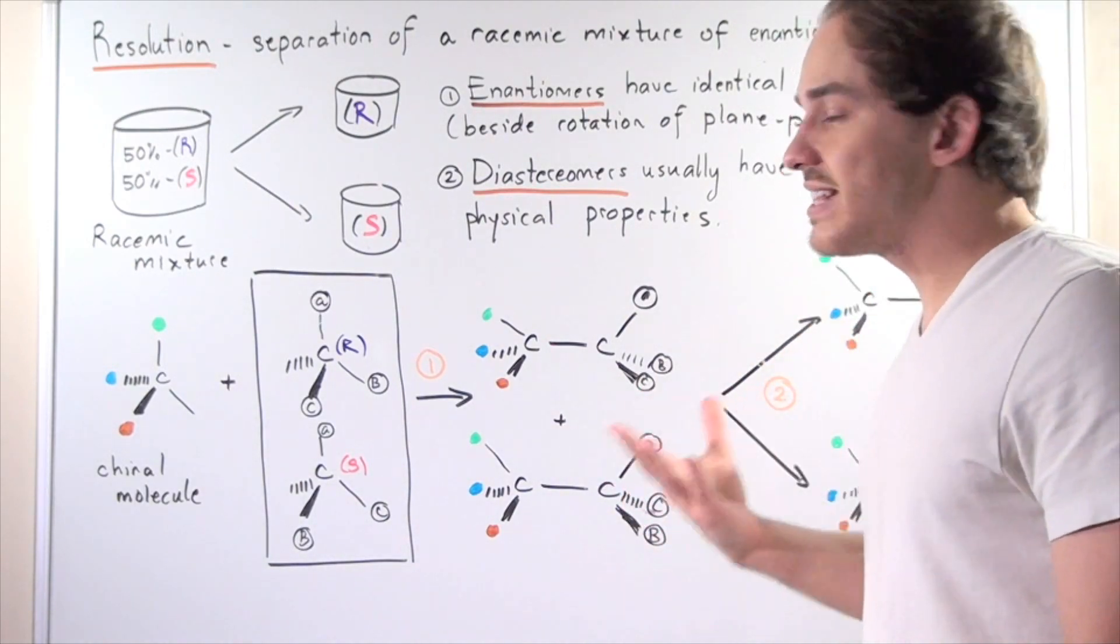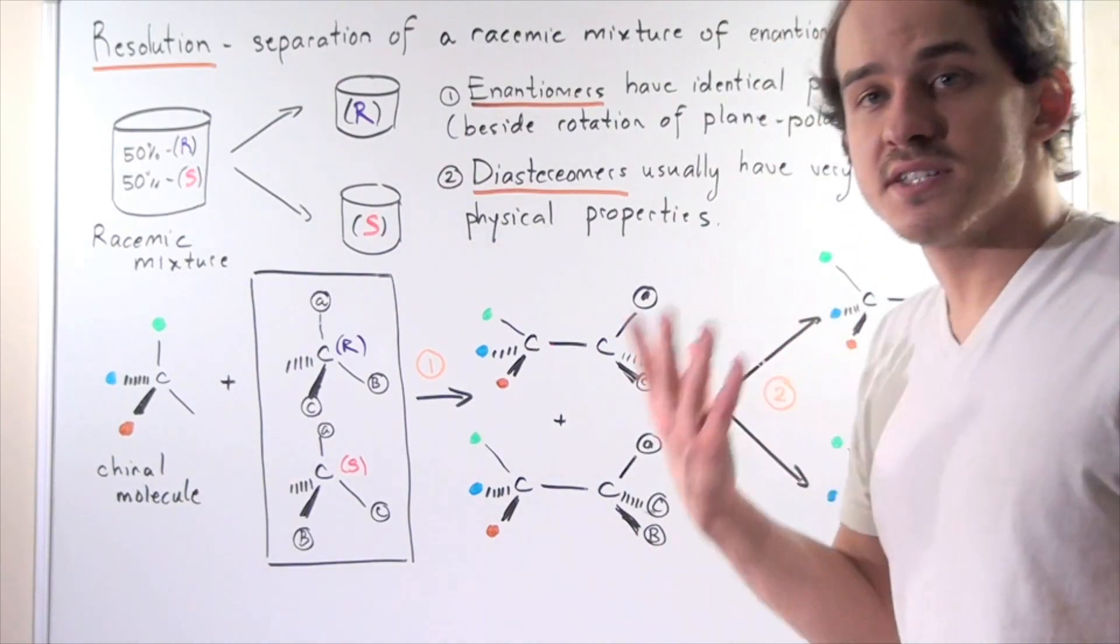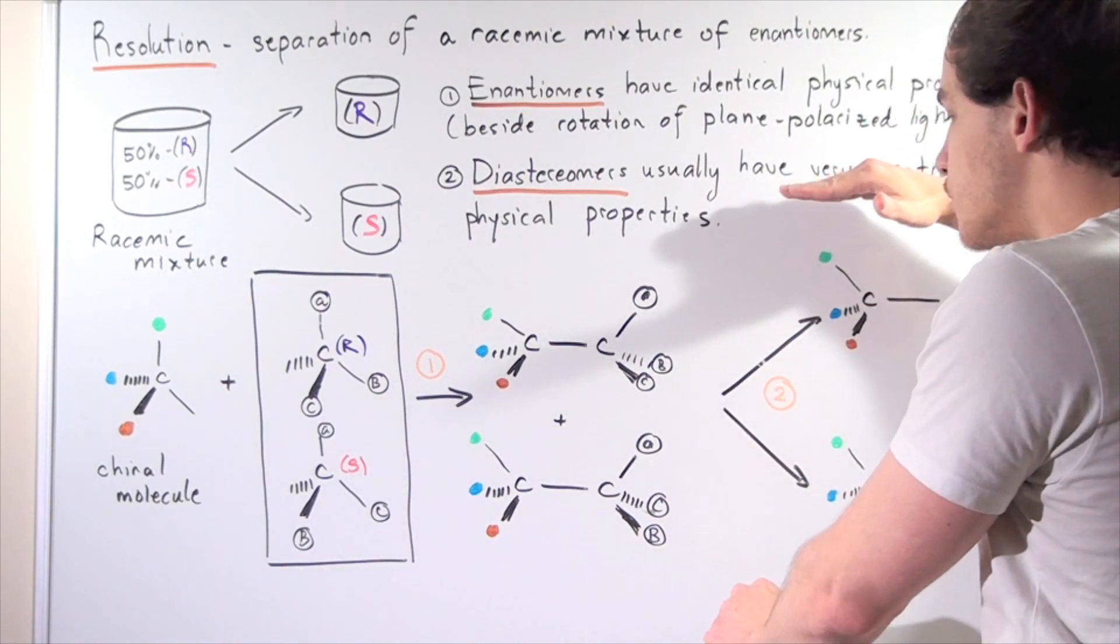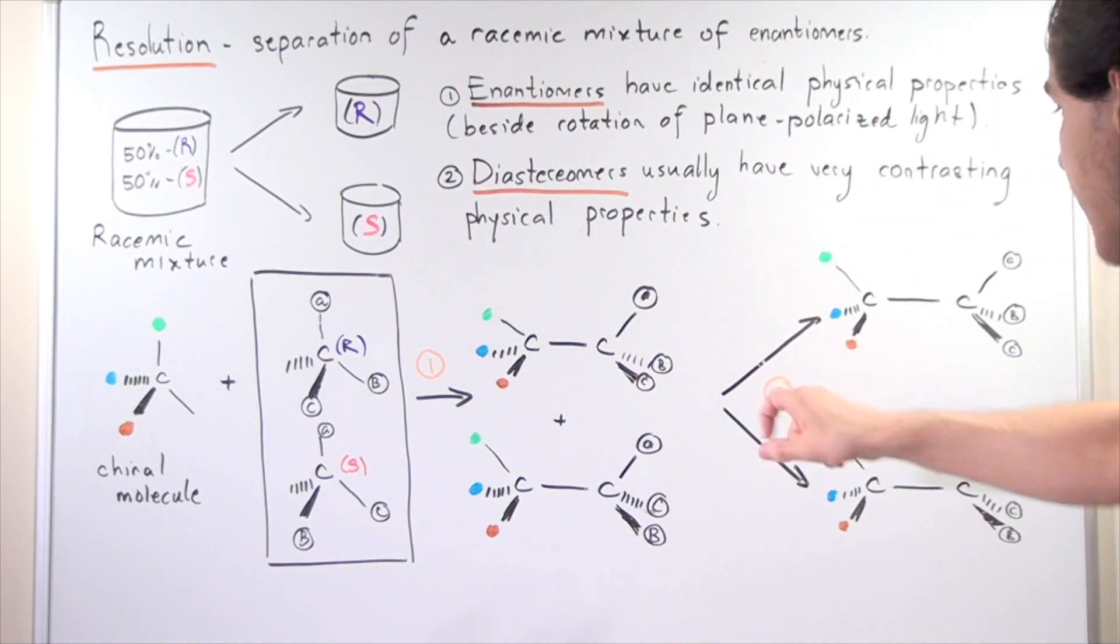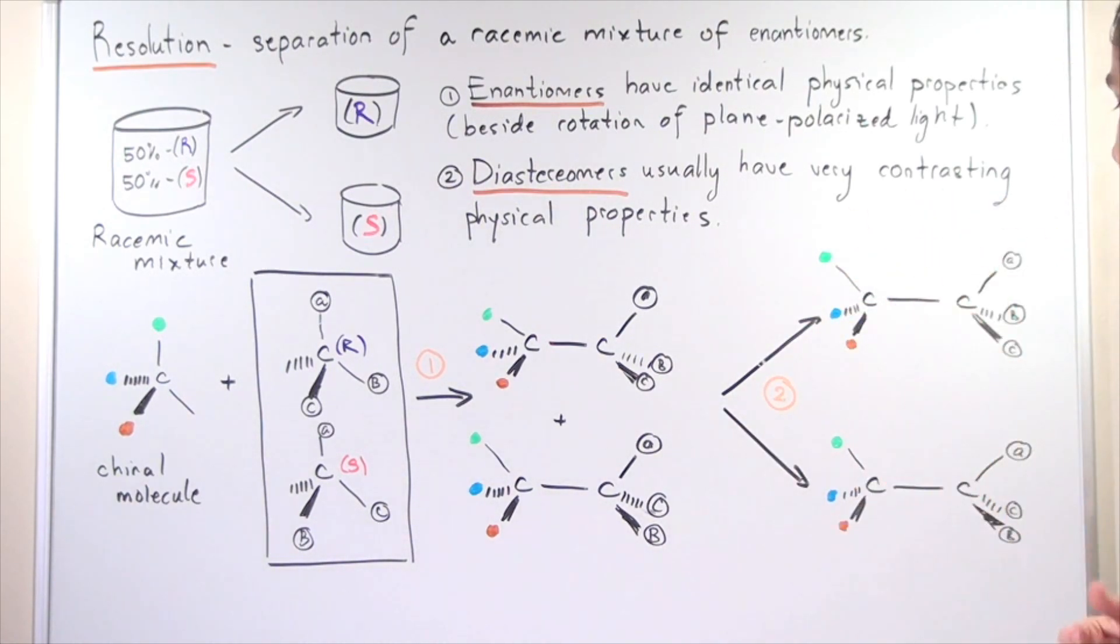We can use a step like distillation or chromatography or crystallization to separate these into different containers. After step two, we have one diastereomer in one container and the second diastereomer in the second container.